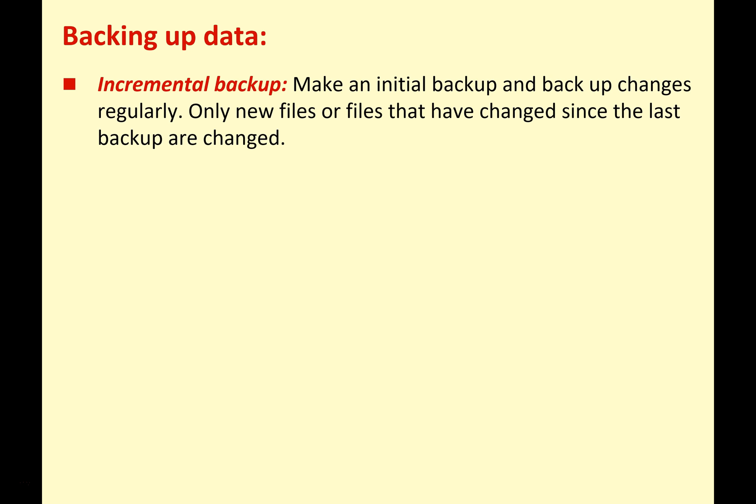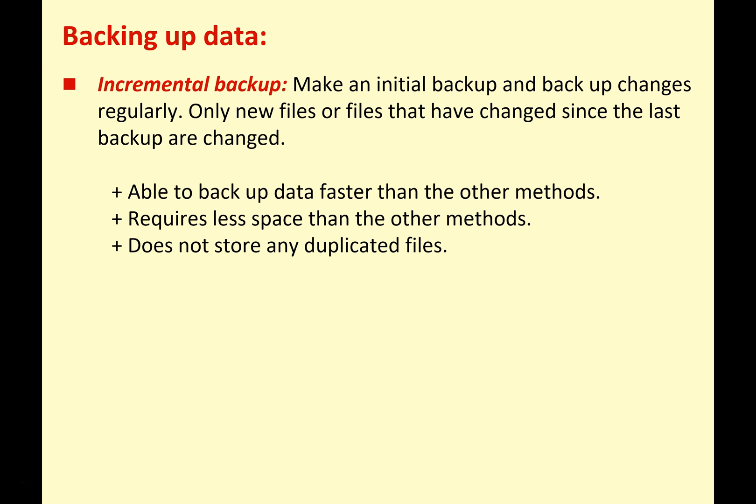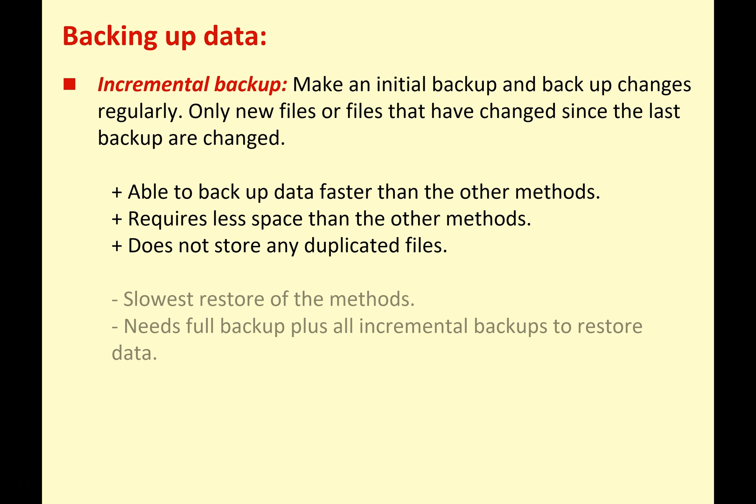Incremental backup means making an initial full backup and then only backing up the changes regularly — only new files or files changed since the last backup are saved. This is more efficient: you can back up data faster, it requires less storage space, and you won't store duplicated files. However, it's the slowest restore method — if you need to restore, it takes longer and you need the full backup plus all the individual incremental backups to restore your data.